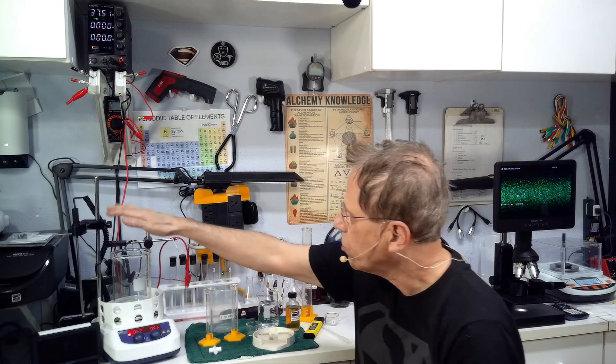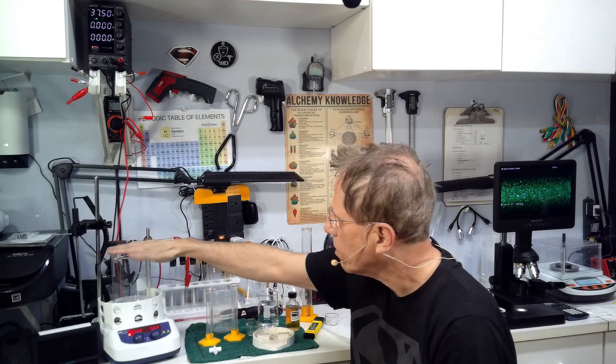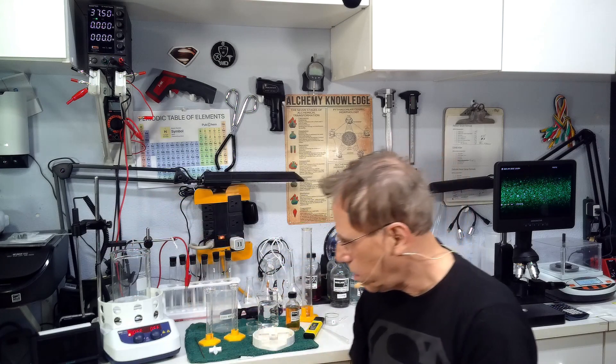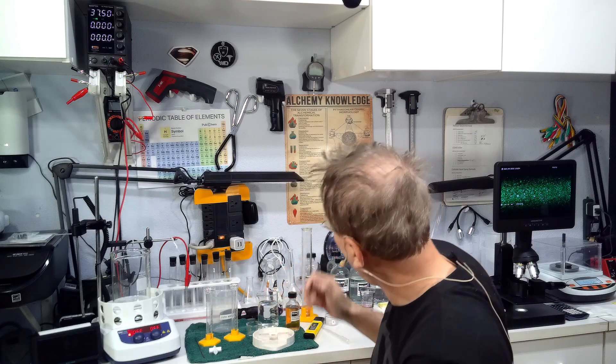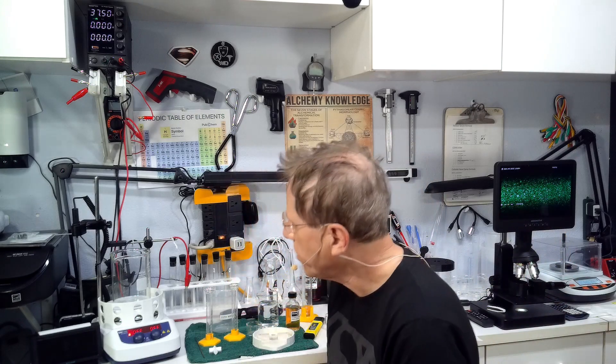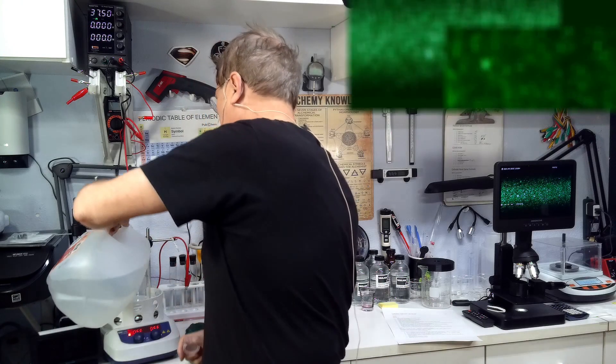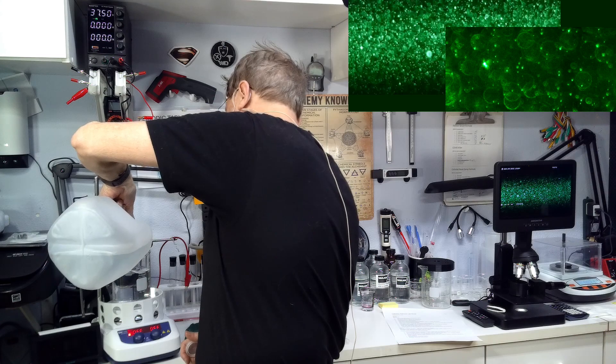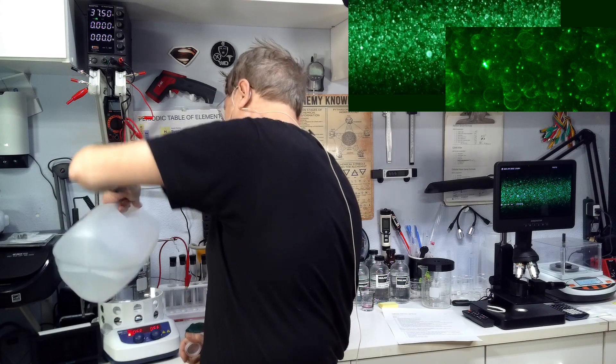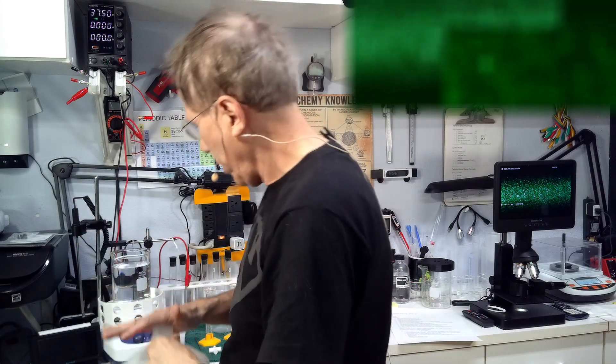We're going to start with 500 milliliters of distilled water. Over here on the video microscope, that is an eight to six to eight parts per million colloidal platinum, even though it doesn't look like it.